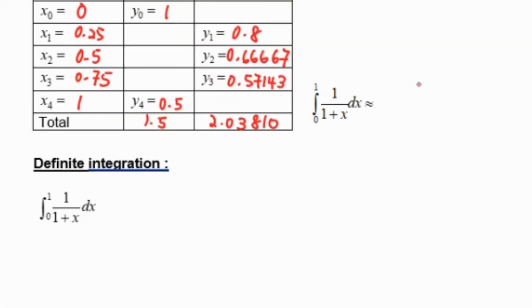Therefore, in trapezoidal rule, the formula will be h over 2 times y0 plus y4 which is 1.5, plus 2 times y1, y2, y3 which is 2.03810. The answer approximates 0.697, which is correct to 3 decimal places.